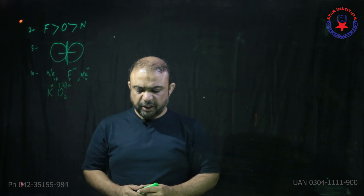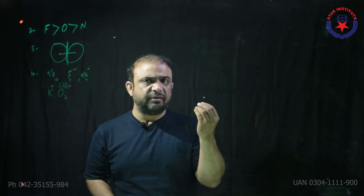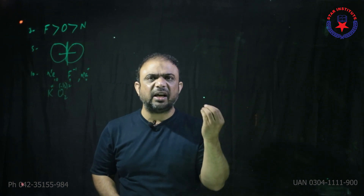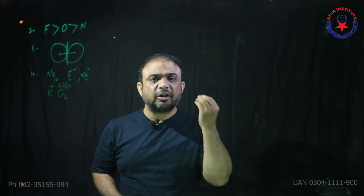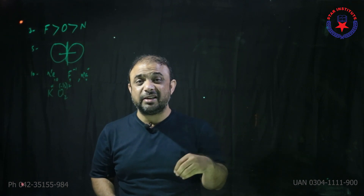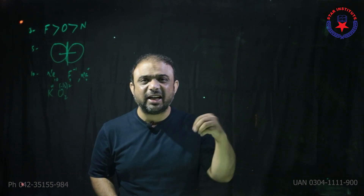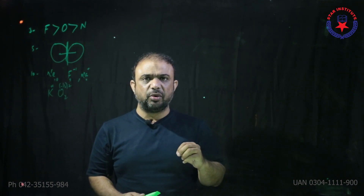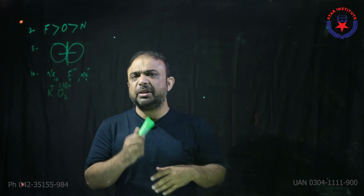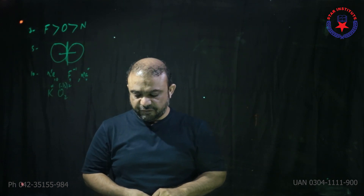Question number 15: Which alkali metal is most reactive? In the case of metals, reactivity means their electropositivity. The more electropositive a metal, the more reactive it is considered. Among these options, the most electropositive element is cesium. So the choice is A.